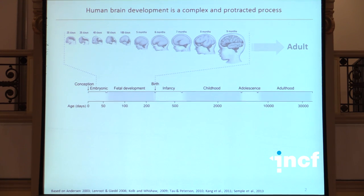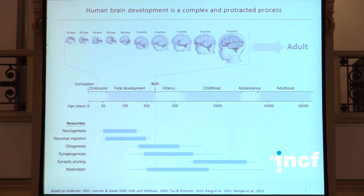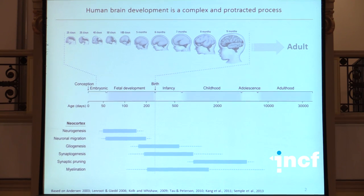Your brain will grow three times in size in the first five years of postnatal life. You are still making connections and making myelin probably into late adolescence. If you look at major cellular events such as neurogenesis, migration, synaptogenesis, axonal growth, and myelination, they are spread across time. It takes around five months to create the entire repertoire of neurons in the human cerebral cortex — that same process takes seven days in mice.